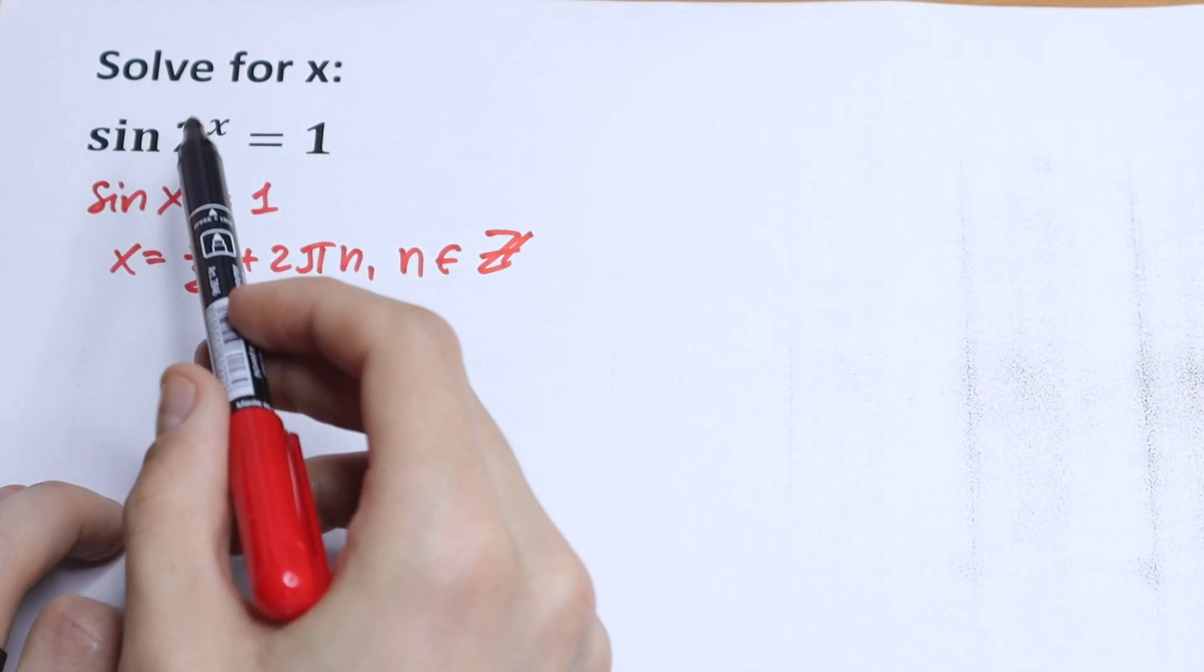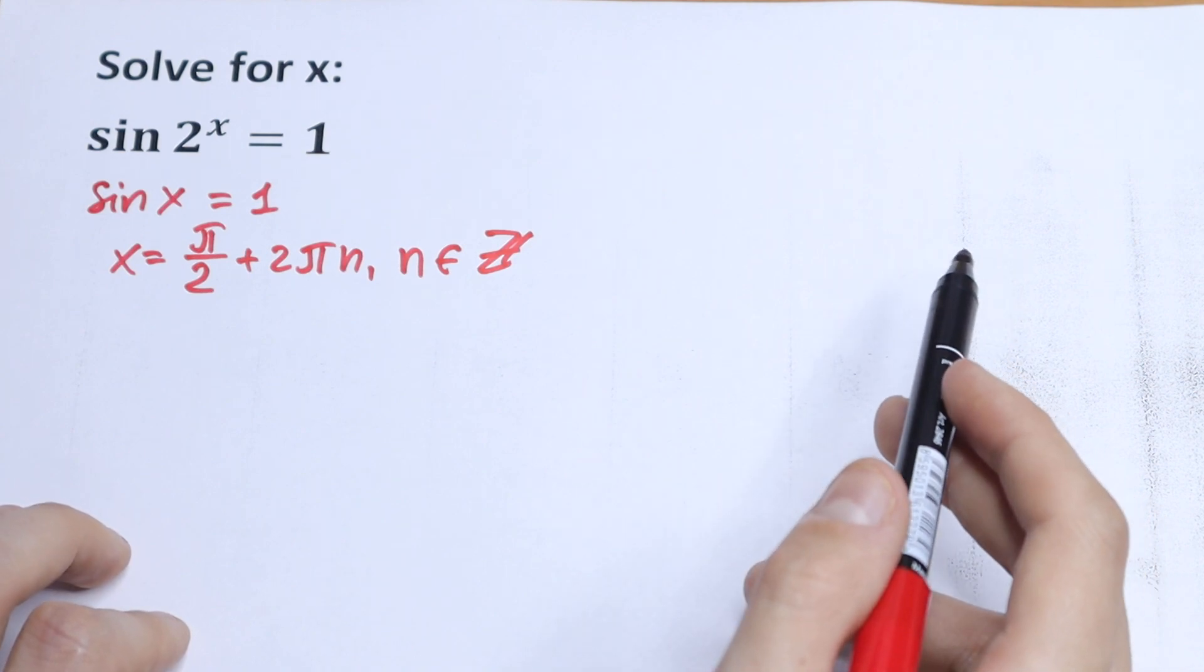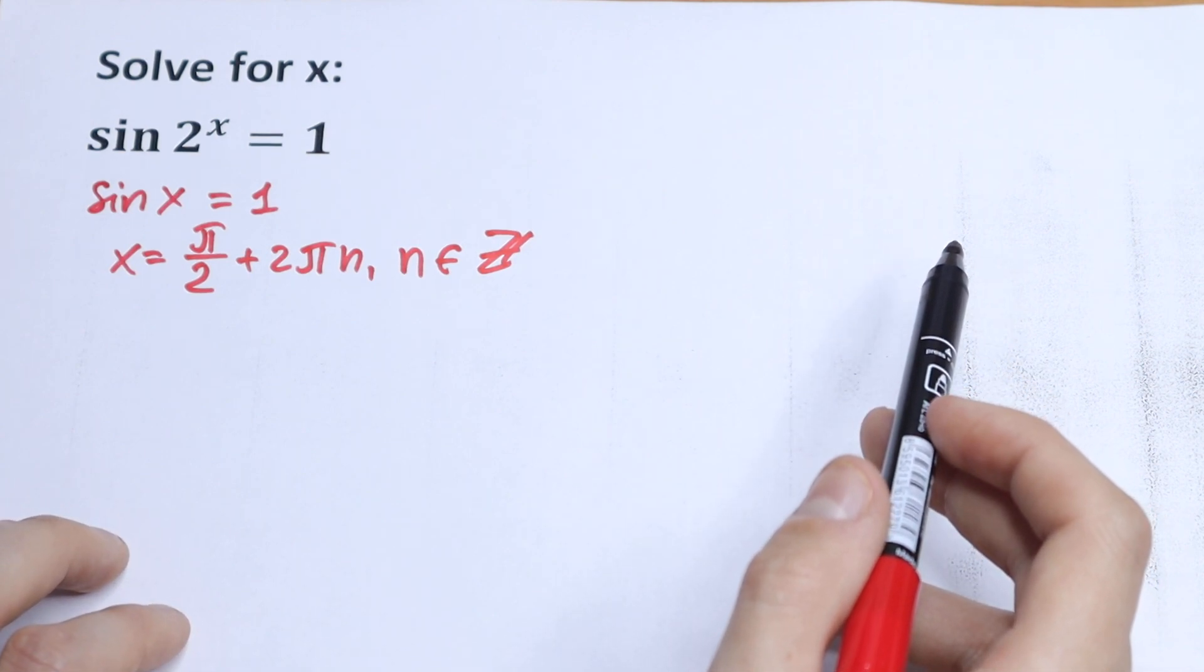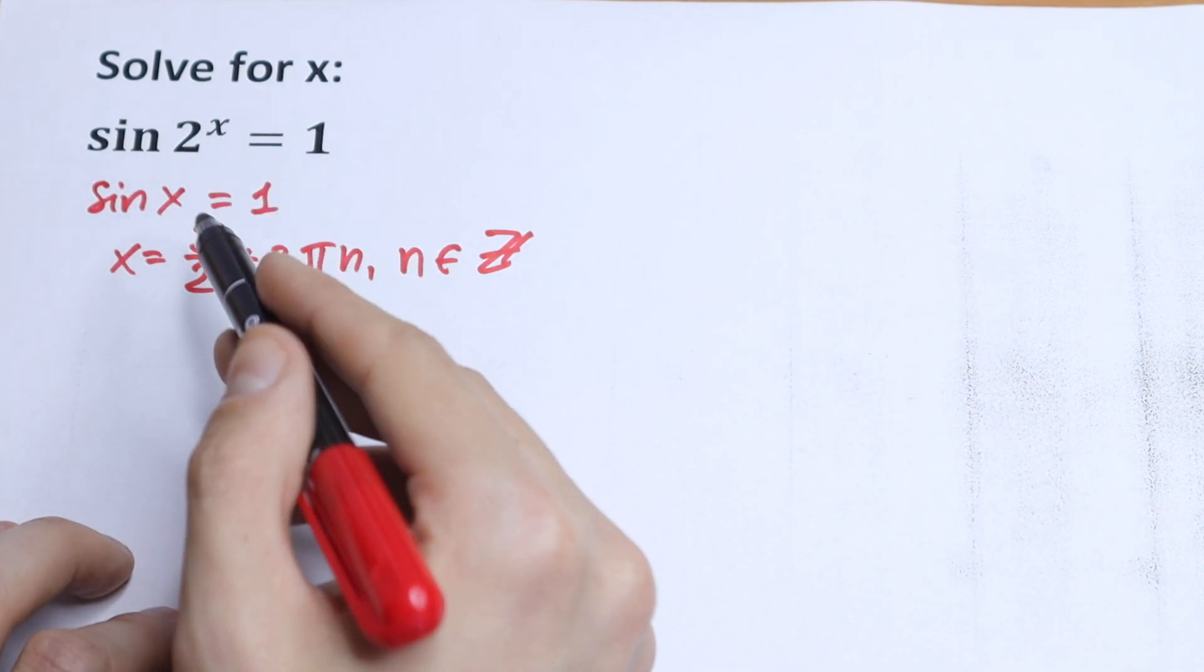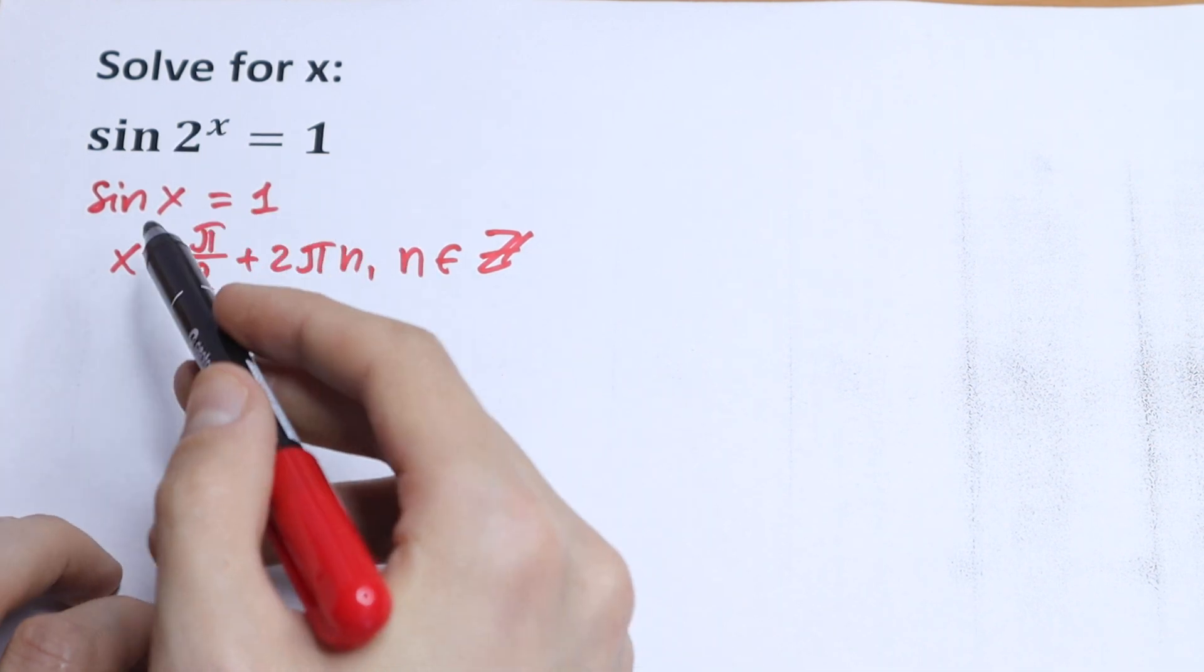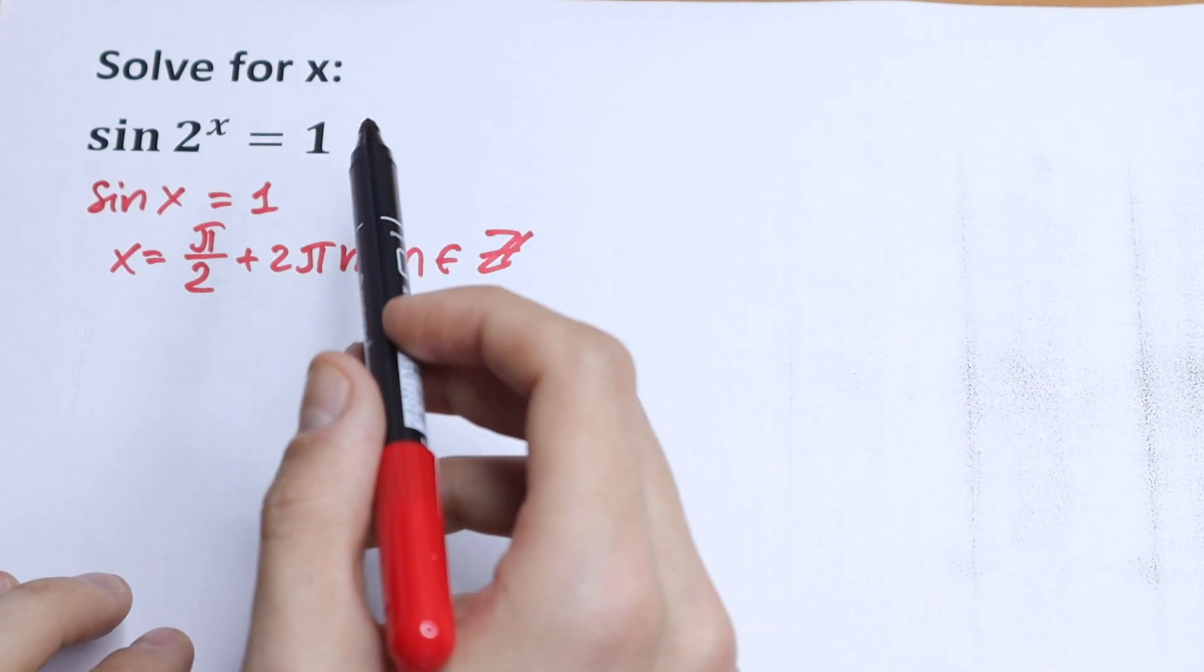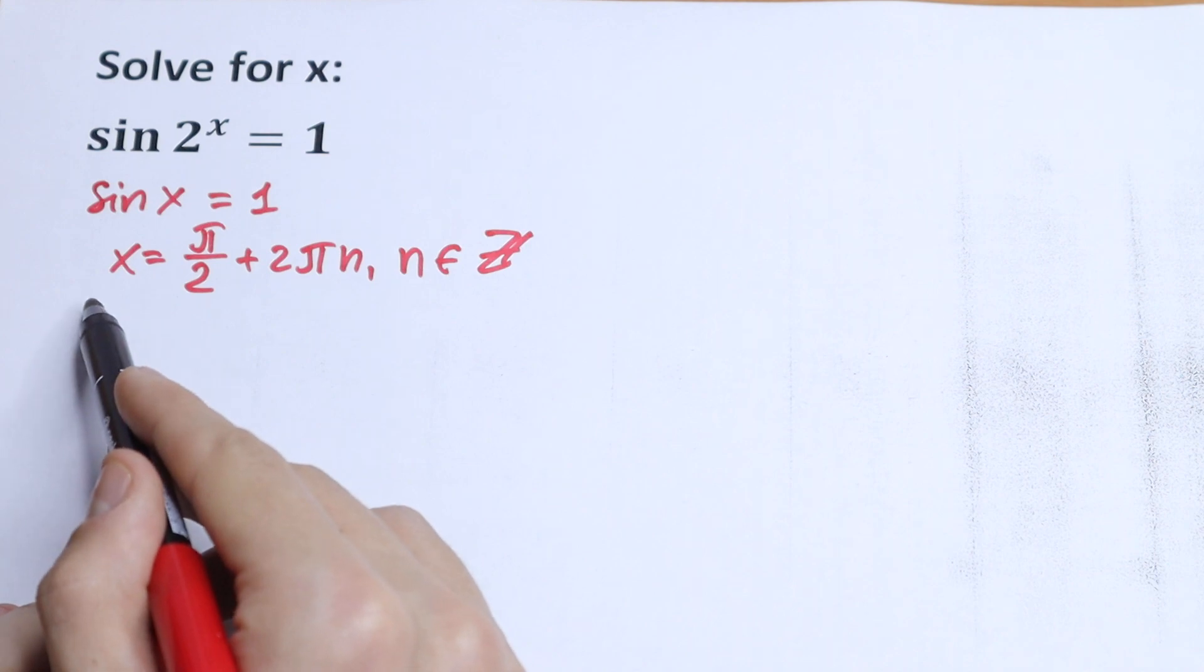OK, but instead of our x we have 2 to the power x. So how can we simplify? How can we work with this? Of course, we write that our 2^x equals this. Because it doesn't matter - x, 2^x, 3^x, x squared - we just need to use our table case.